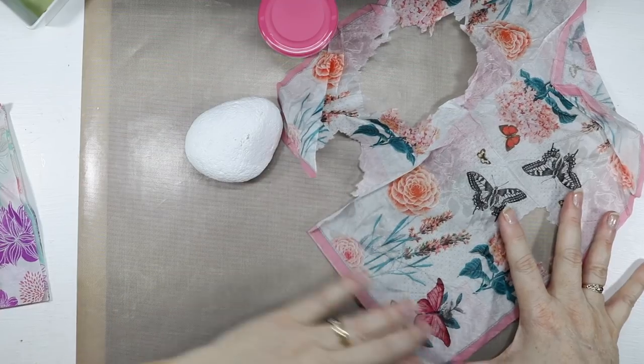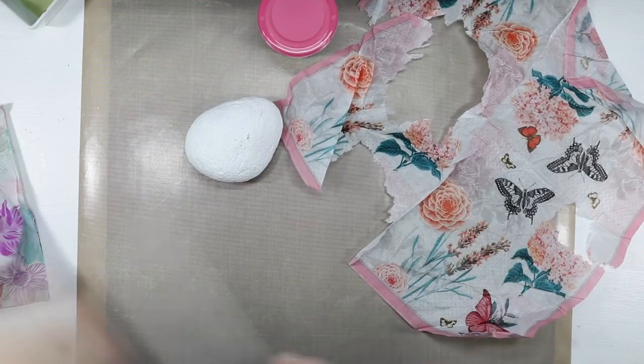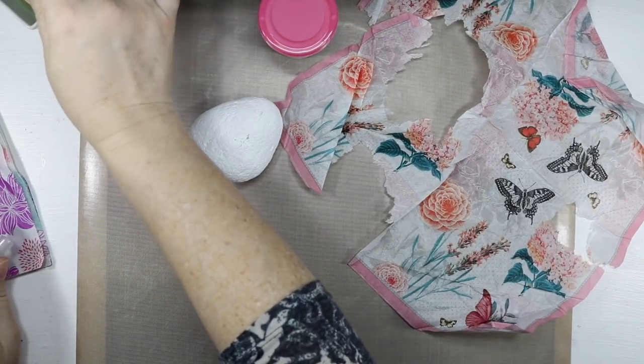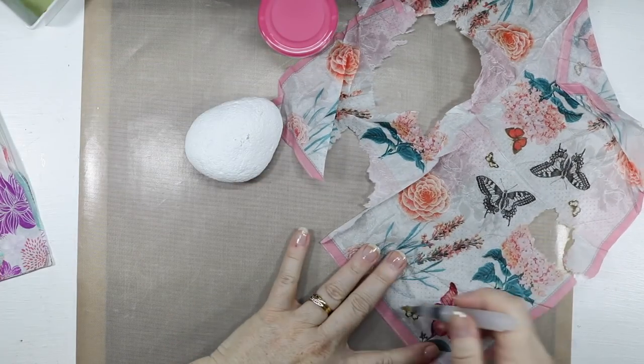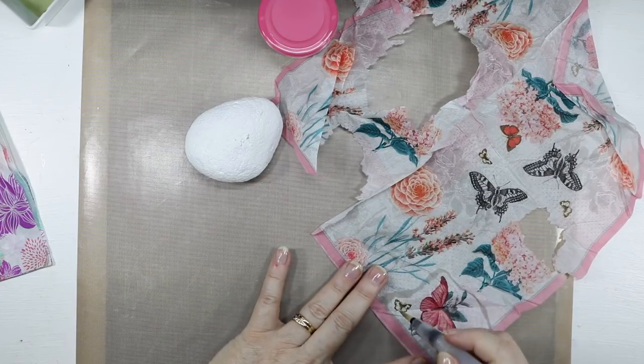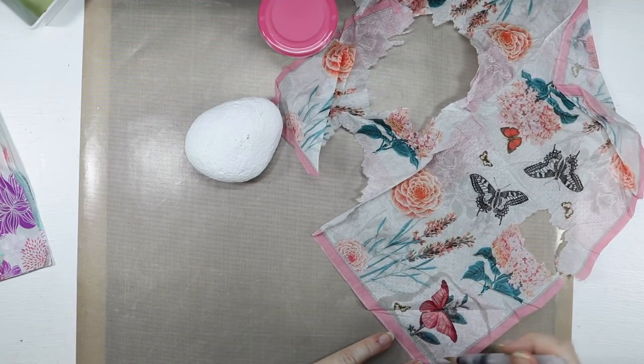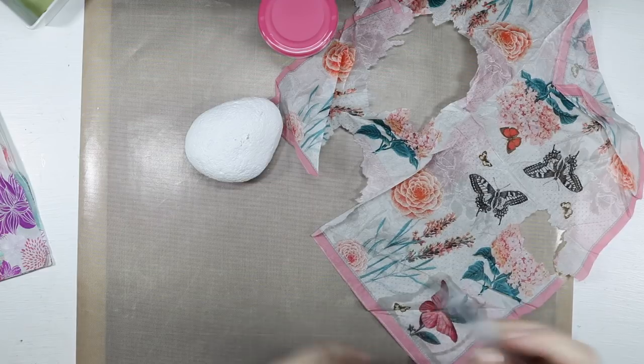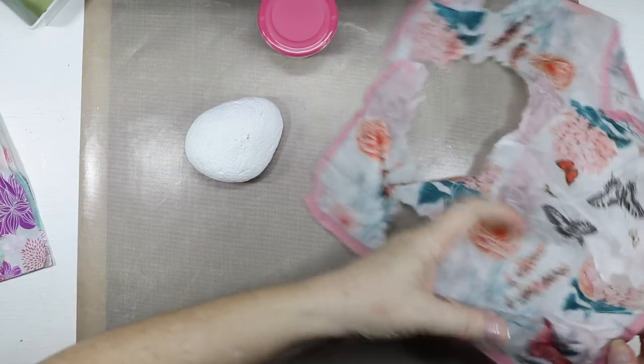I'm going to use a water brush here and I'm just going to go around the butterflies with my water brush because I want a jagged edge. I don't want to cut the tissue paper out because I want the lines soft when I glue the butterflies onto the rock.